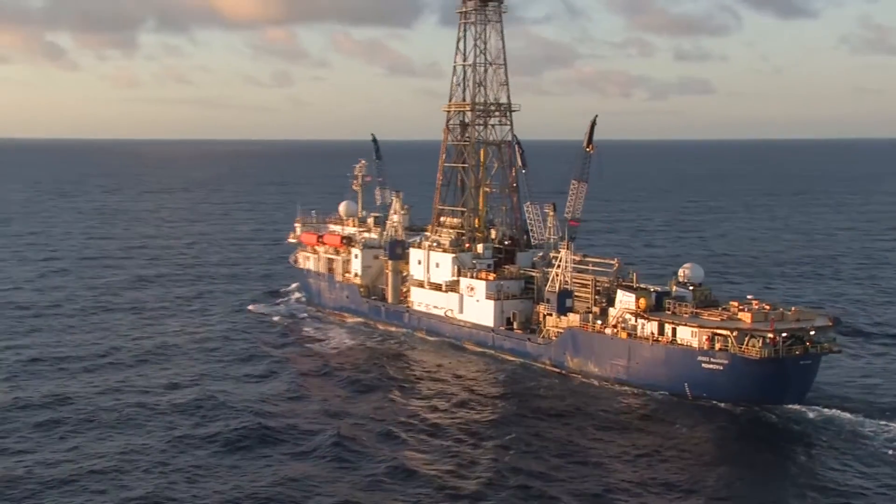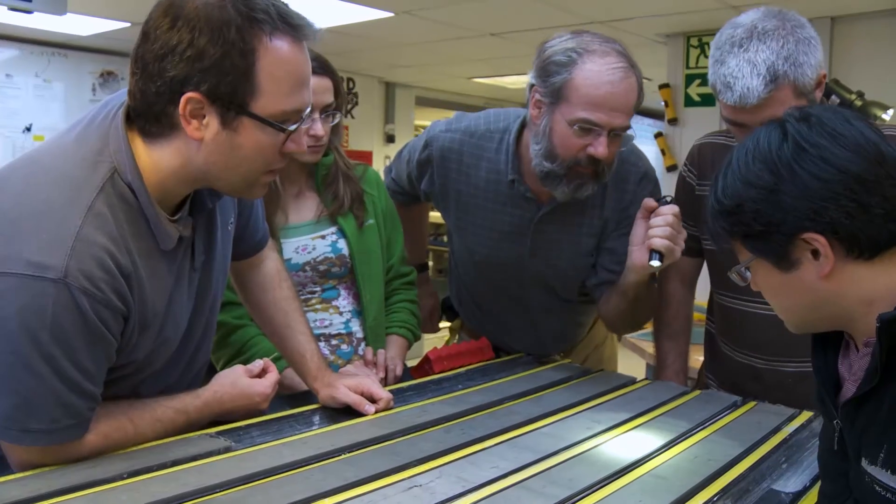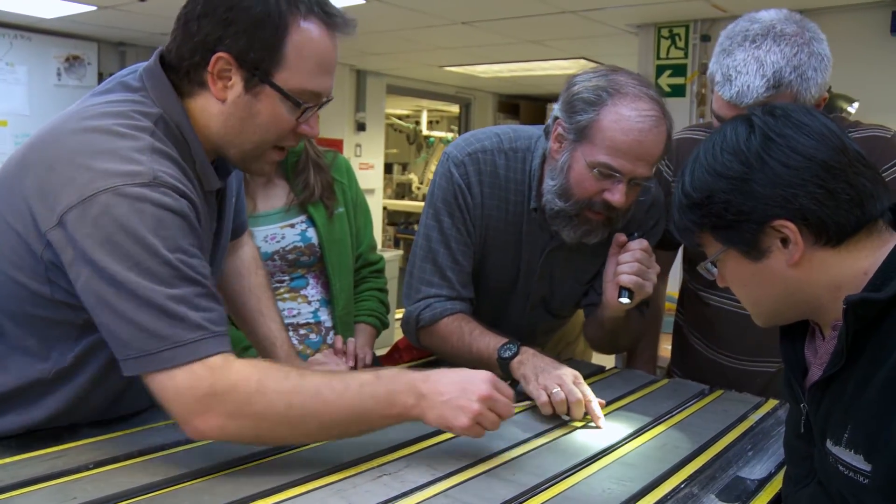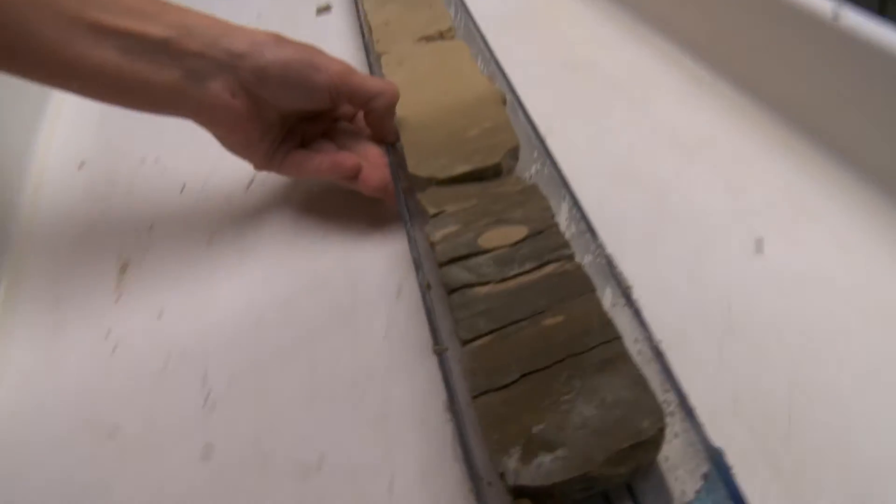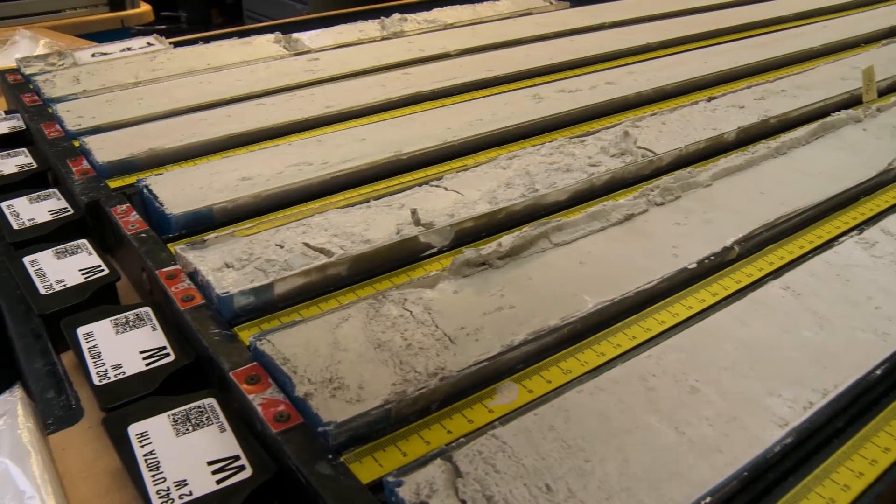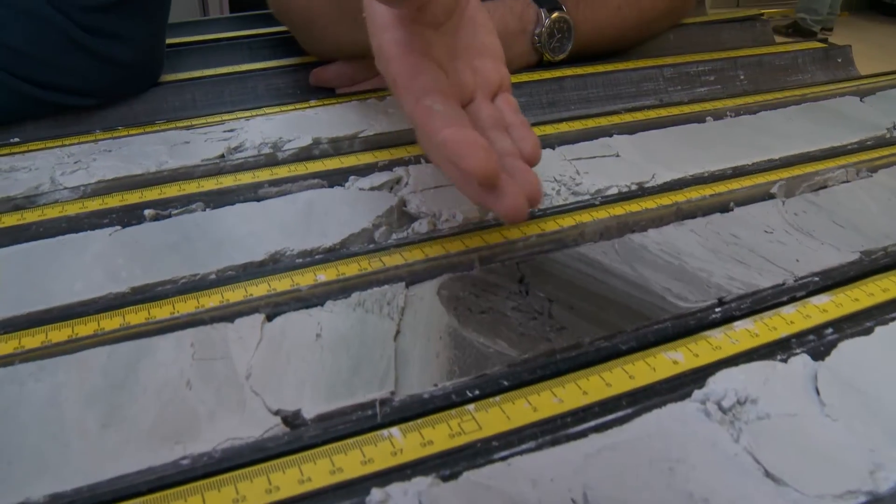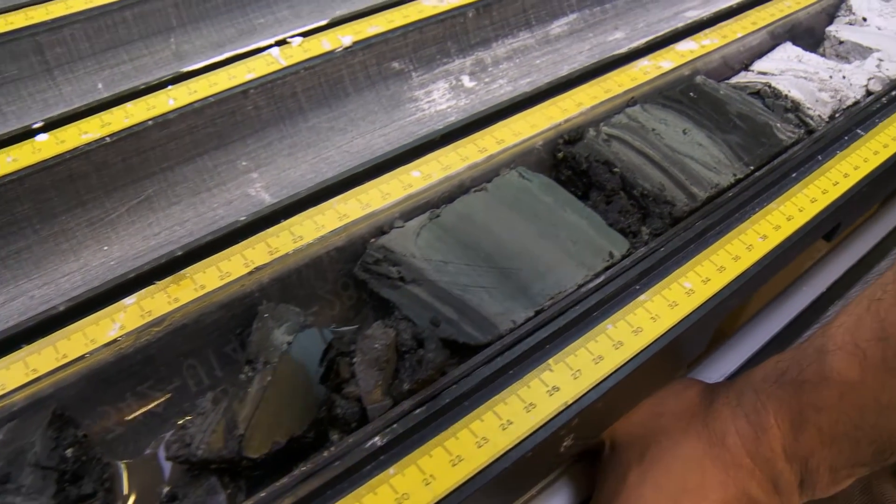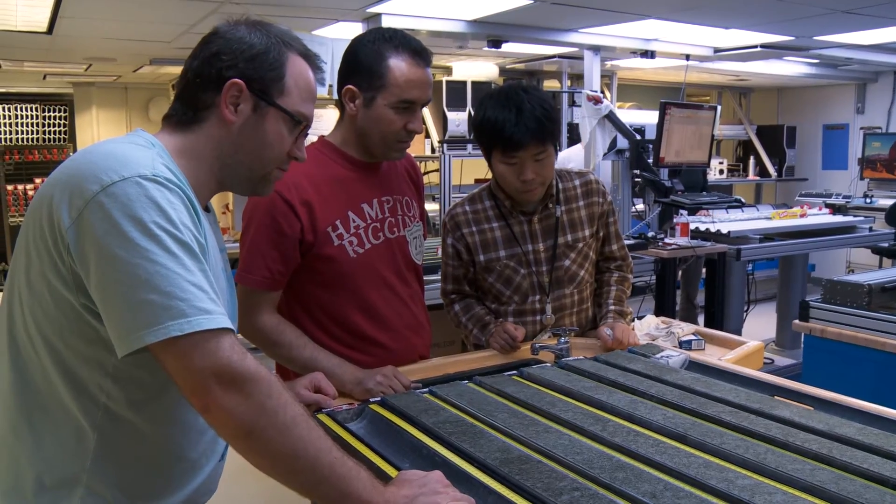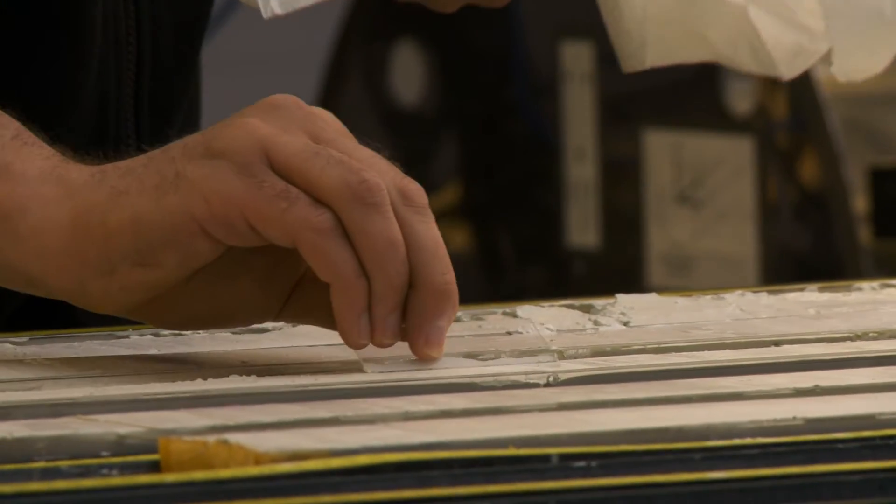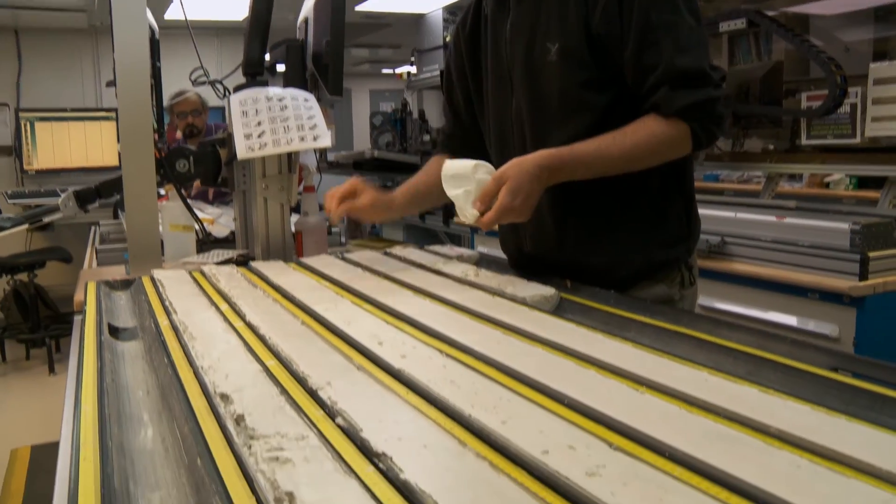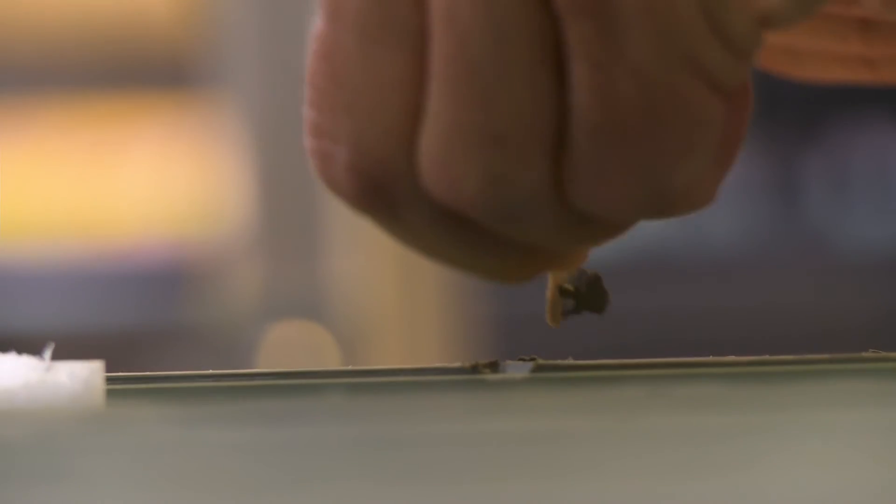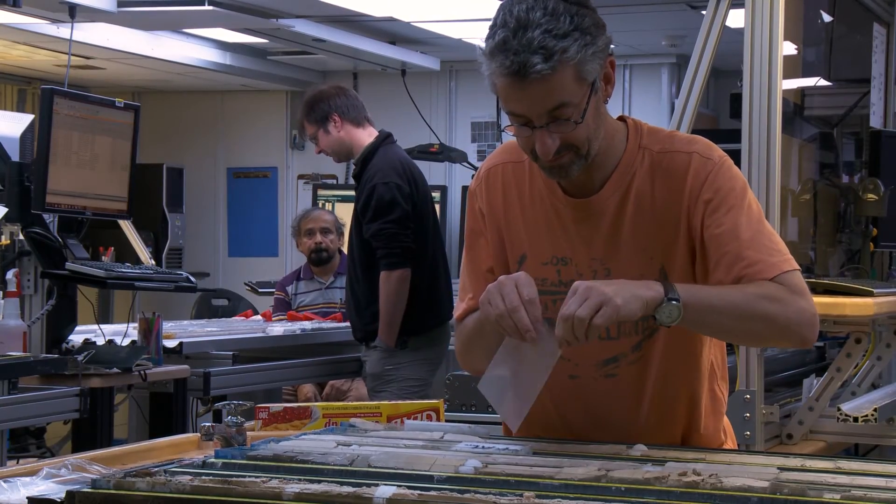Our job on the ship is really to track the variation preserved in the sedimentary record. And that allows all of us to understand how complete the record might be, how discontinuous it might be, how uniform it might be in its composition, whether or not there are specific instantaneous events preserved in the record. And by doing that, that informs the whole science party about the next questions we can ask from that sedimentary record. And it informs the post-cruise research that happens a month after the cruise, a year, five years, ten years after the cruise.